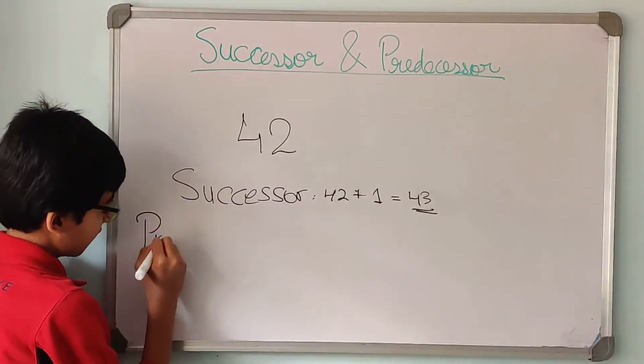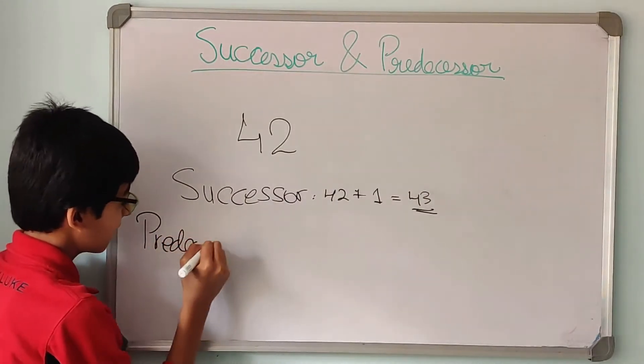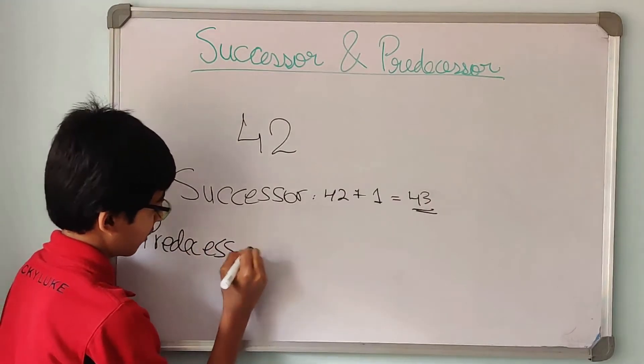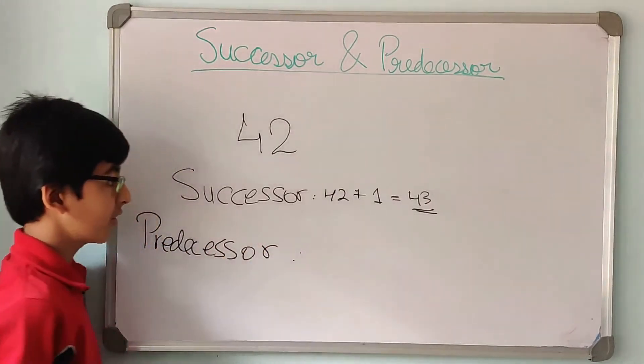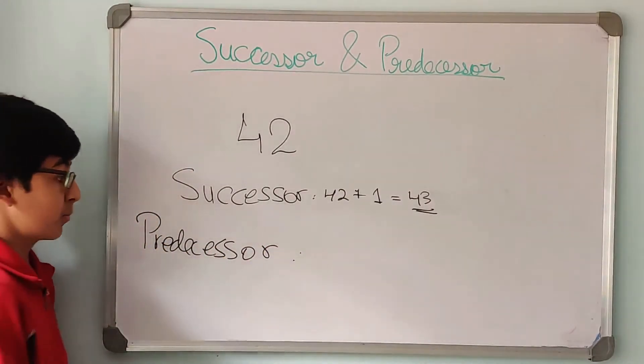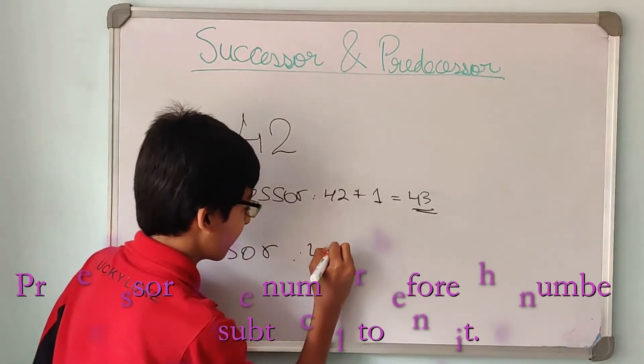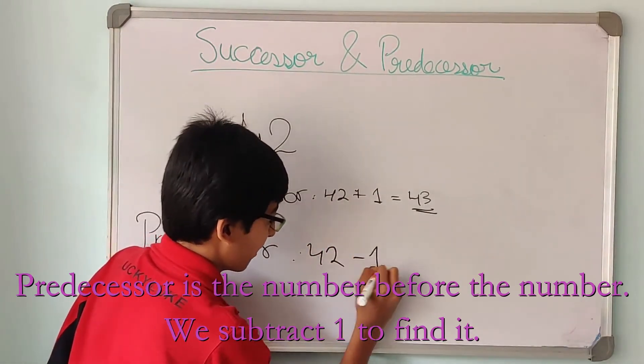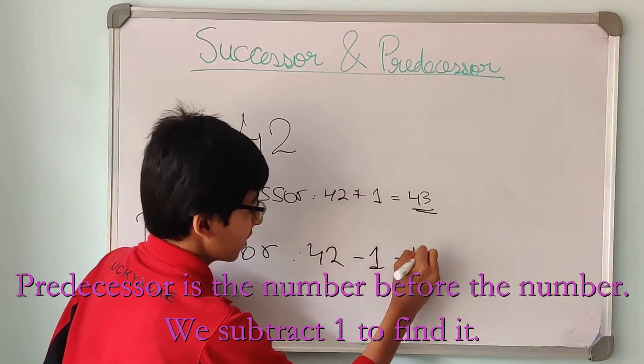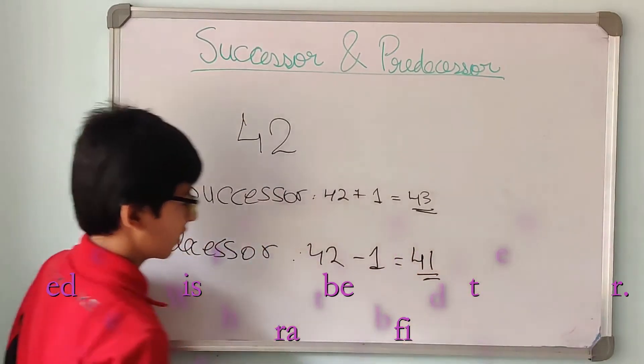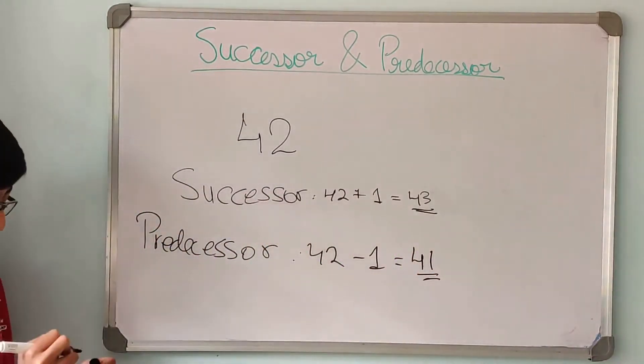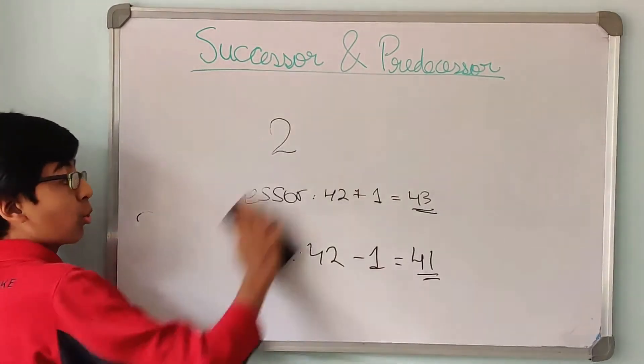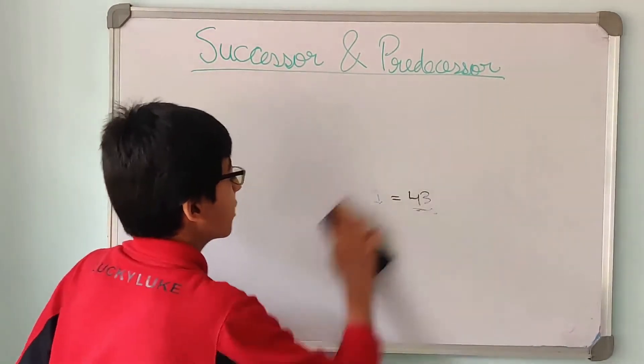Now let us find the predecessor of 42. What does this mean? It is the previous number of it, that is that number minus 1. So over here 42 minus 1 gives us 41.